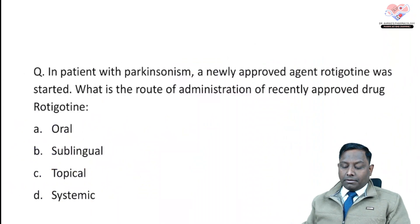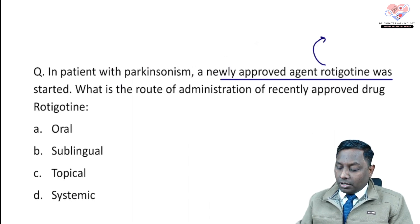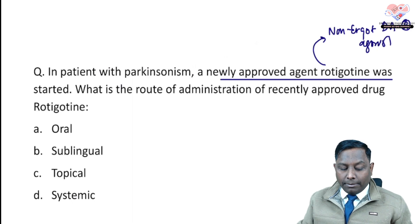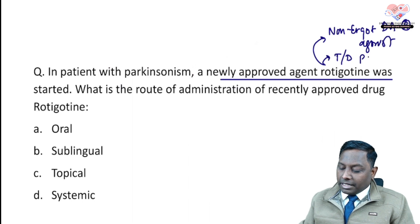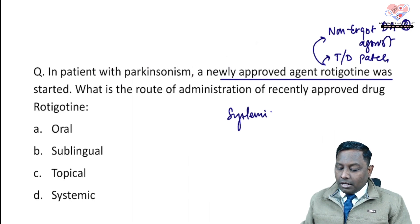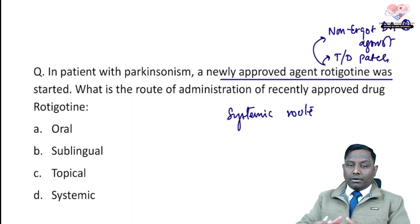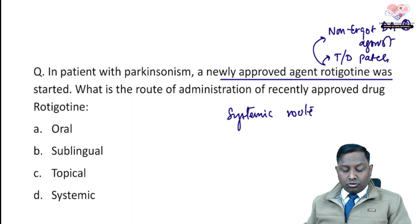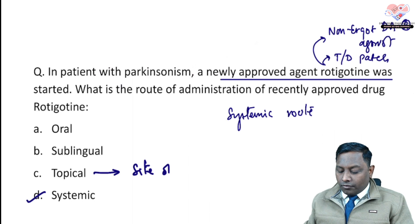The next question involves a patient with parkinsonism for whom a newly approved agent, rotigotine, was started. The question asks for the route of administration. Rotigotine is a non-ergot dopamine receptor agonist available as a transdermal patch. In pharmacology, transdermal patches come under the systemic route of drug administration because the drug undergoes slow capillary absorption before entering systemic circulation. Among given choices, the answer is systemic route — not topical.